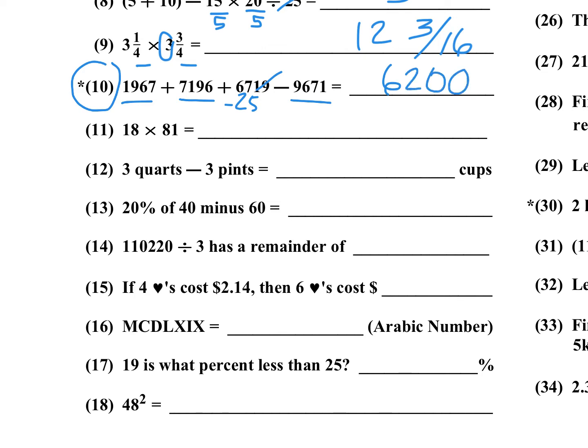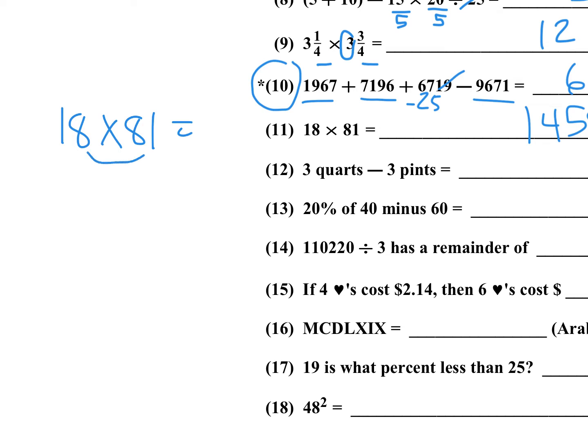Number 11: 18 times 81. There's a couple ways you can do this. You can do 18 times 1 is 18, carry 1. 18 times 8 is 144 plus the 1 would be 145, so 1458. Another way of doing this, you could do 8 times 1 is 8, and then you could do the outer and the inner like you're doing FOIL. 64 plus 1 is 65, carry a 6, and then you multiply 1 times 8, that's 8 plus the 6 that we carry, that's 14. 1458 was the answer.